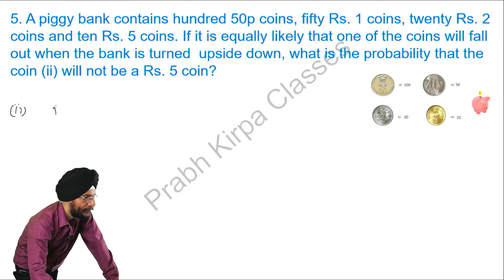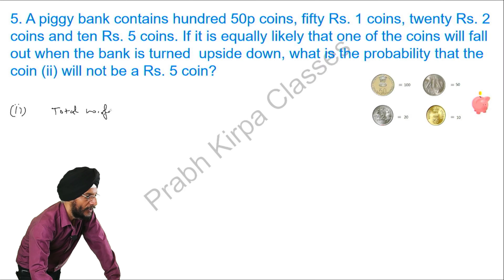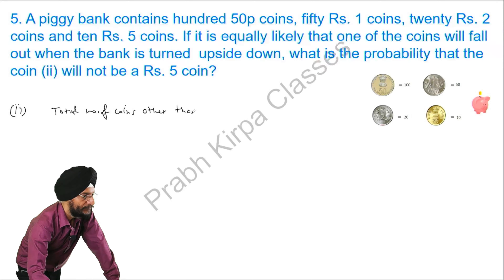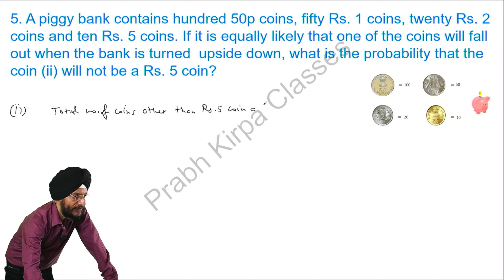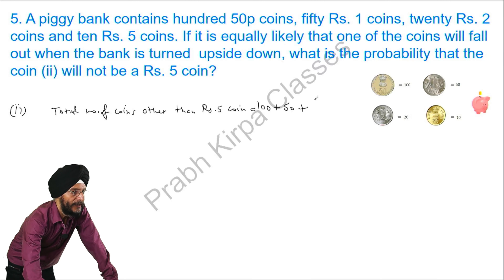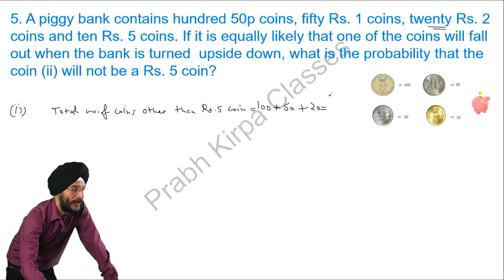Here we will calculate the total number of coins other than the 5-rupee coin. The coins other than 5-rupee are: 150 Paisa coins, 50 one-rupee coins, and 20 two-rupee coins. So all the coins other than the 5-rupee coin total 170.